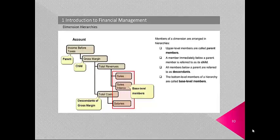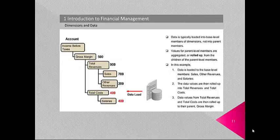Members of a dimension are arranged in hierarchies. Upper level members are called parent members. A member immediately below a parent member is referred to as its child. All members below a parent are referred to as descendants. The bottom-most level members of a hierarchy are called base level members. Data is typically loaded into base level members of dimensions, not into parent members. Values for parent level members are aggregated or rolled up from the children.